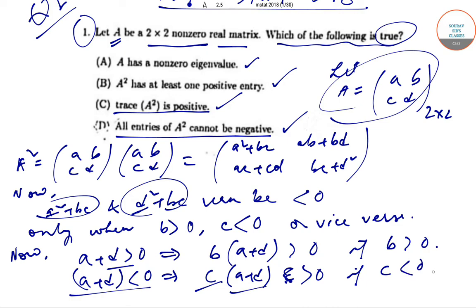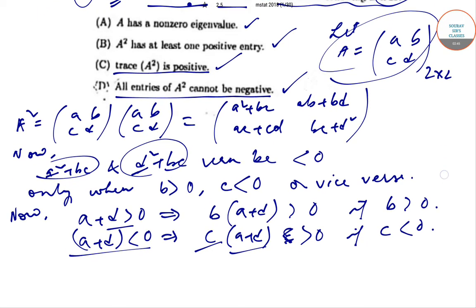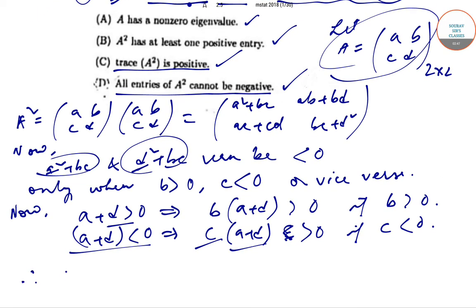Therefore, we can definitely tell that the entries ab+bd and ac+cd are not all zero. So we can tell that all entries of A² cannot be negative, which is option D.